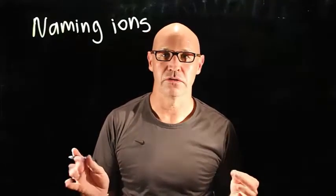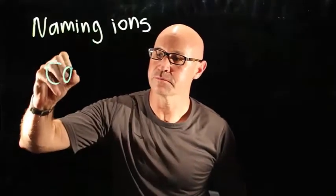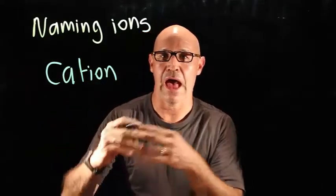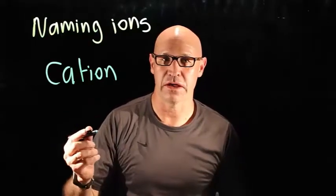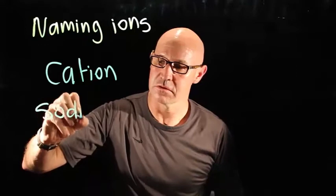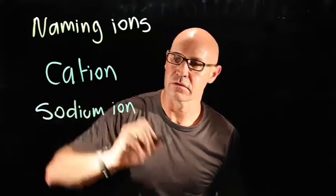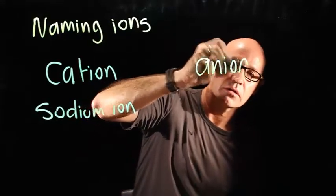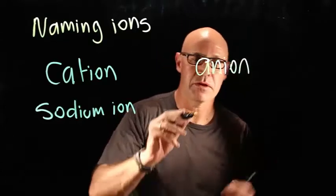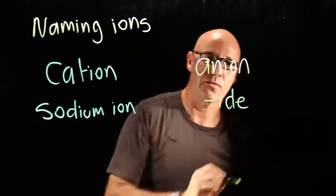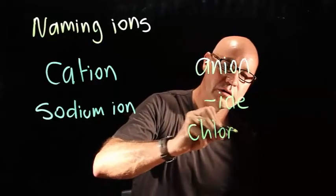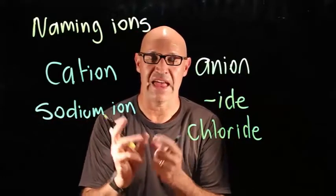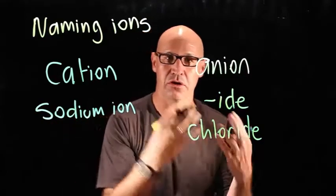When we're naming ions, the cation is just the name of the element adding 'ion' to the end of it. For example, sodium ion. The anion, on the other hand, is kind of like the element name but it ends in '-ide.' For example, chloride. So the ionic compound NaCl is sodium chloride.